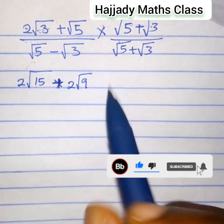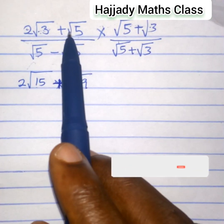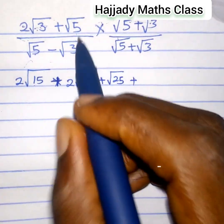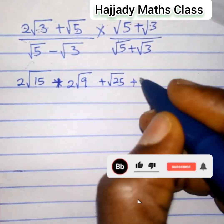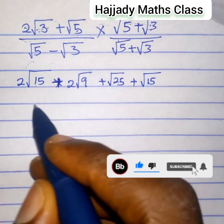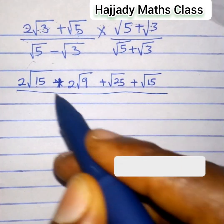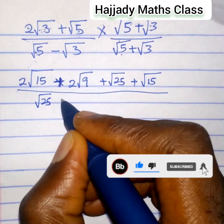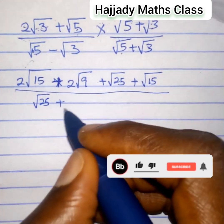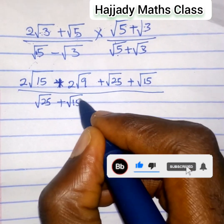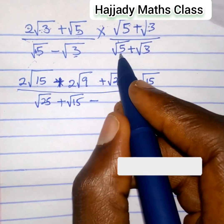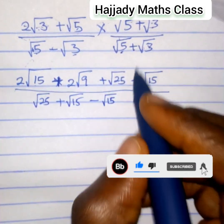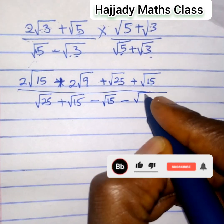Here we have plus. So root 5 times root 5 gives root 25. Plus root 5 times root 3 gives root 15. All over root 5 times root 5 gives root 25. Plus root 5 times root 3 gives root 15. Minus root 3 times root 5 gives root 15. Minus times plus is minus. Root 3 times root 3 gives root 9.